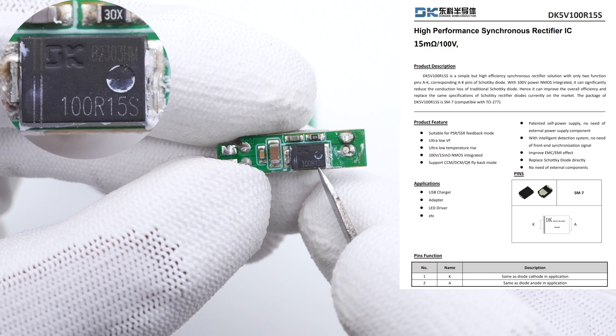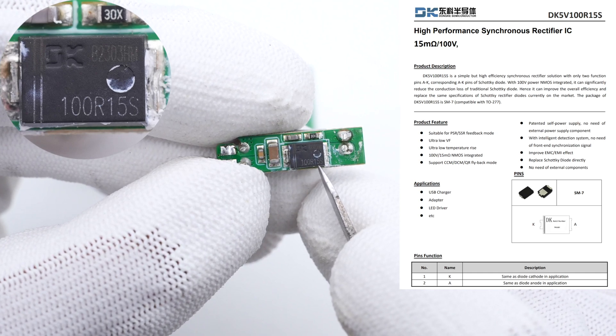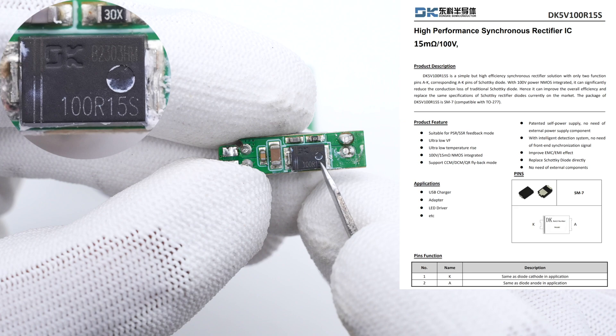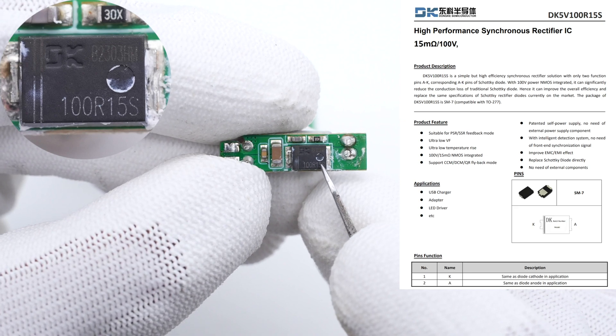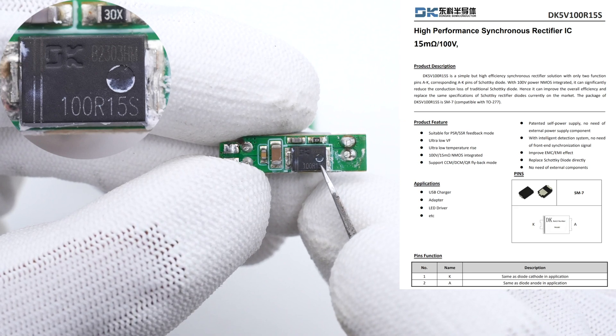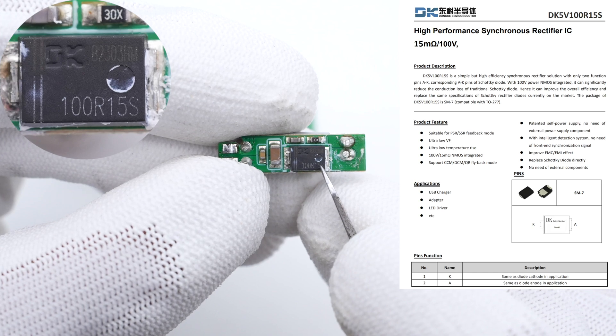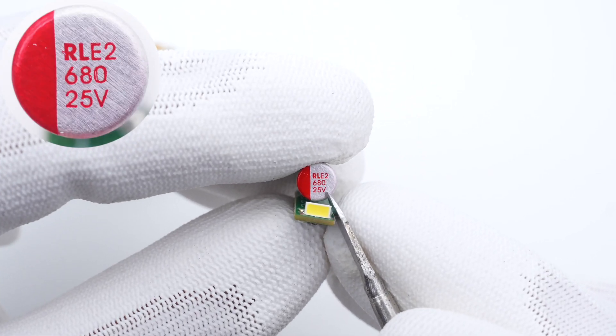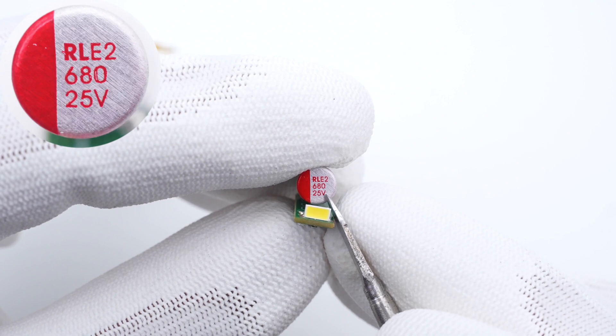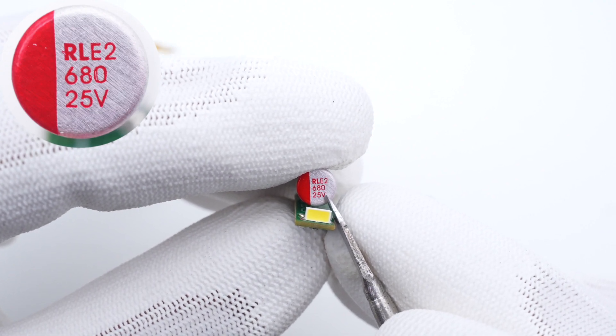Moving on to other small PCBs. This synchronous rectifier is from Dongke and adopts SOP-7 package. It doesn't require external components and comes with an integrated 100V, 15mΩ MOSFET. The solid capacitor for output filtering is from RelconCap, 680μF, 25V.